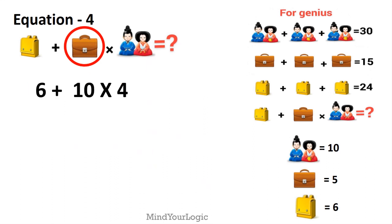Now let's see the final equation. The final equation is 6 plus 10 multiplied by 4. We will apply BODMAS here, so multiplication first. The equation becomes 6 plus 40, which equals 46. So our final answer is 46.